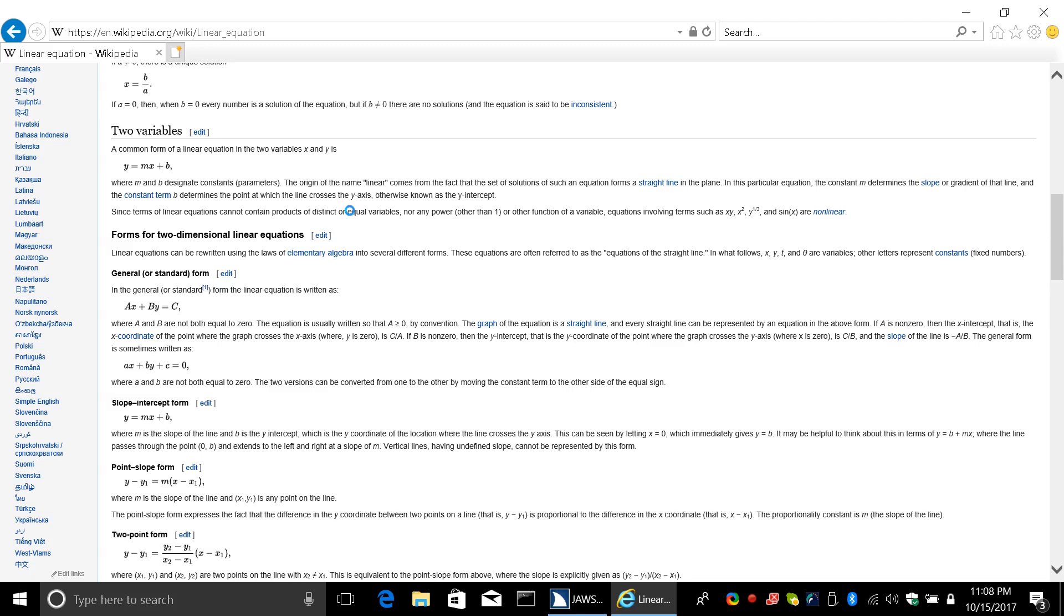And I've already navigated to the two-point version, so I'm going to hit down arrow. Y minus Y sub 1 equals fraction. Y sub 2 minus Y sub 1 over X sub 2 minus X sub 1. X minus X sub 1.